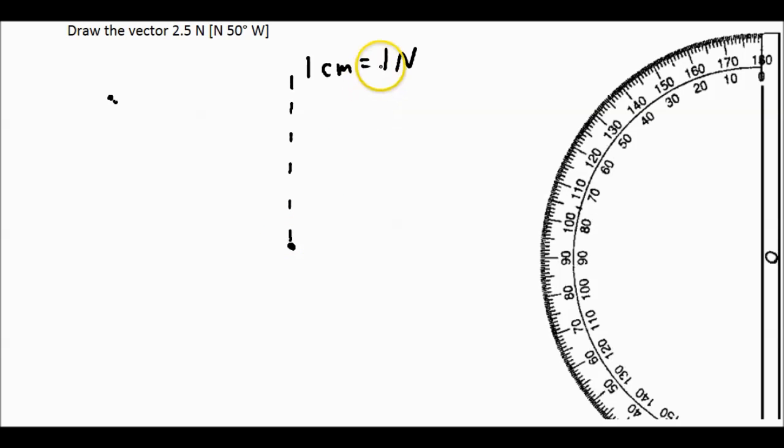I'm going to look to my scale. I see 1 centimeter is 1 newton. So I'm going to draw 2.5 centimeters to represent the 2.5 newtons. I'm going to start at my starting point and draw 1, 2.5 newtons.